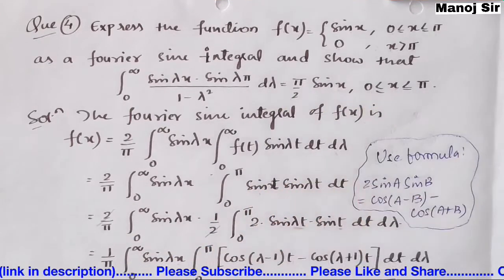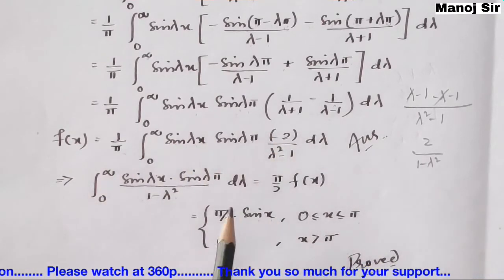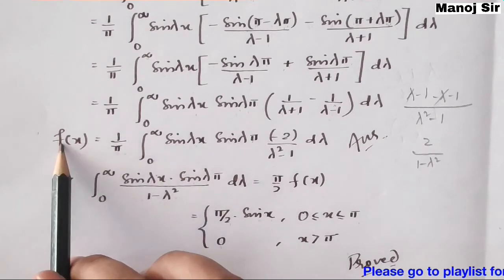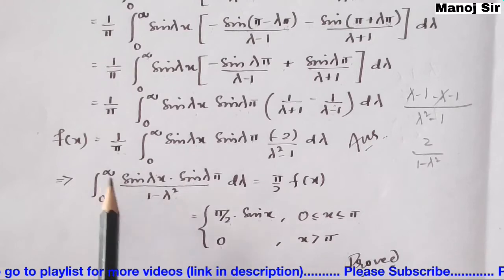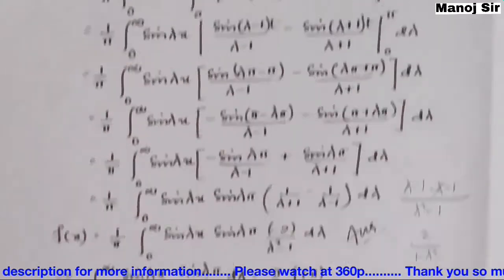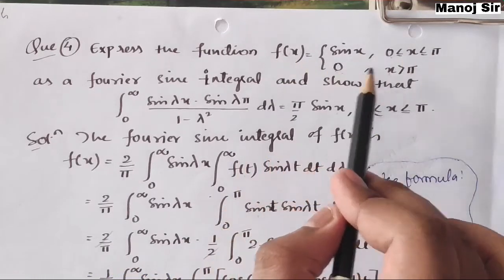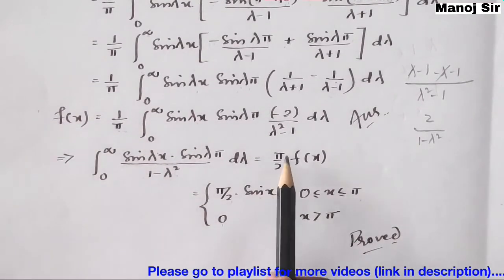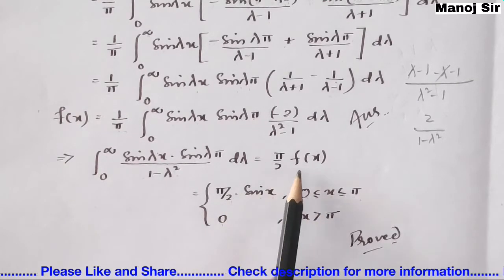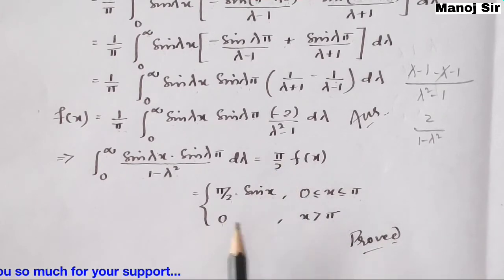For the second part, we need to show the definite integral result. Taking the factor 2 to the left side gives (2/π) on the left. Moving π/2 to the right gives: ∫₀^∞ sin(λx) sin(λπ) / (1 − λ²) dλ = (π/2) f(x). Since f(x) = sin(x) for x ∈ (0, π), this equals (π/2) sin(x). When x > π, f(x) = 0, so the result is 0.